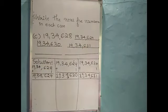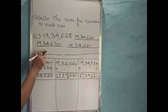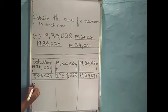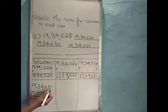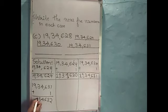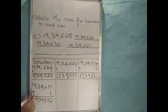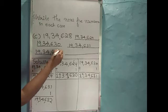We should add 1 to this number to get the next number. So I will write here 19,34,631. After that I will add 1: 1 plus 1 is 2. Write remaining numbers as it is. So the next number is 19,34,632.